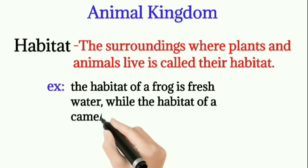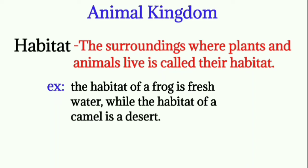Examples for habitat: frog, camel, polar bear — so many animals can be given as examples. Notice that the frog is adapted to both terrestrial and aquatic atmospheric conditions. The camel is adapted to desert atmospheric conditions — the desert is called the habitat of the camel, and it has a terrestrial habitat.